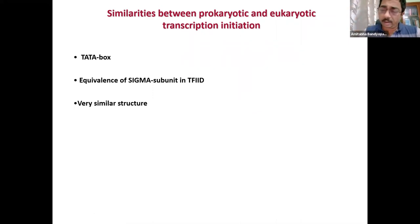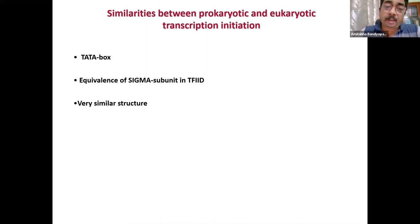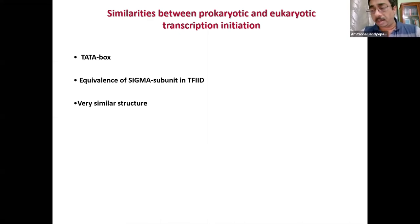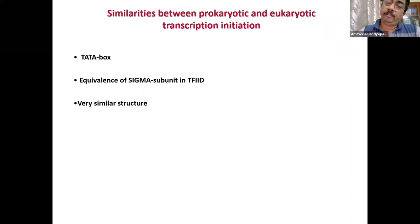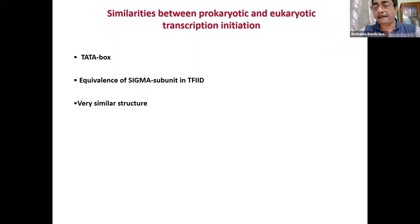In eukaryotes, there is a completely different general transcription factor called TF2D. Both sigma subunit and TF2D are the proteins that actually make contact with the promoter — the TATA box. Sigma subunit is part of RNA polymerase in prokaryotes, while in eukaryotes TF2D is a separate protein complex altogether, not part of the RNA polymerase, but it performs the same function. They also share a similar overall architecture — the saddle-like architecture.